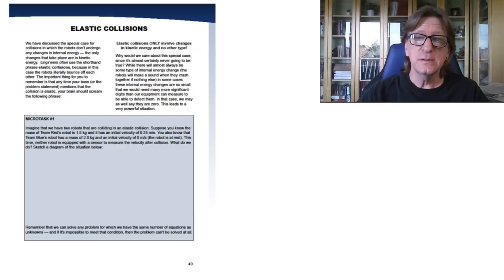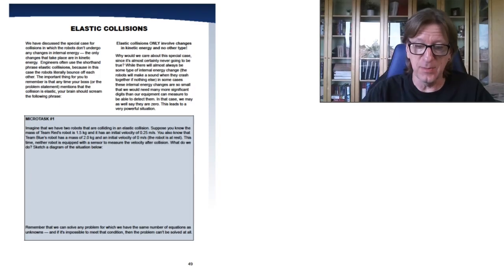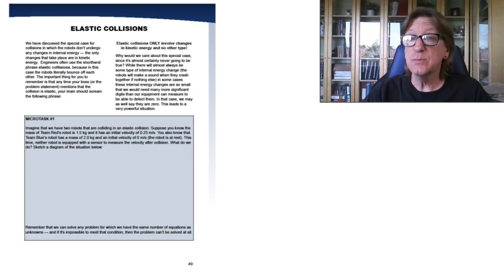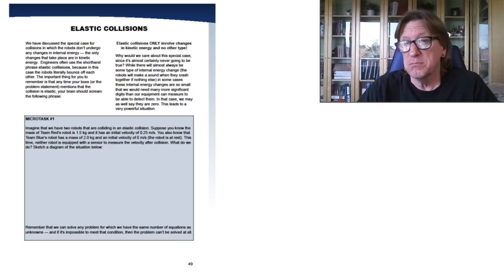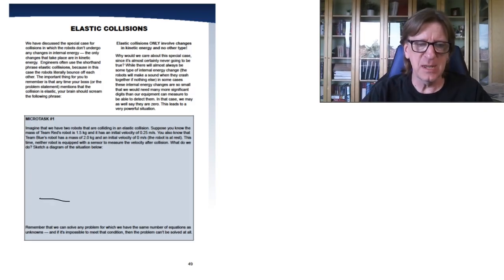So now we've got basically the same type of problem that we've been working with up to this point. We've got two robots and they're going to bang together. The only real difference is that in this case the blue robot is not moving. So it still has an initial velocity, but that initial velocity is zero. That's just going to make our algebra a little bit easier. The same principle applies even if the initial velocity is not zero.